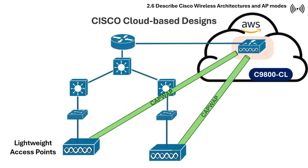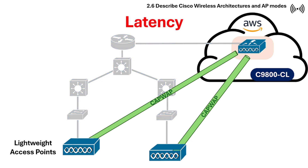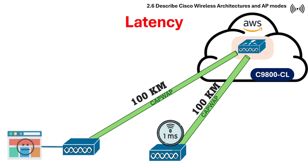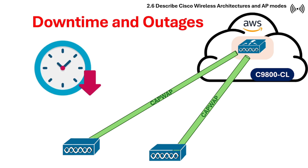This example shows a high-level view of a cloud-based WLC design in Amazon AWS. Cloud-based wireless architectures, while offering advantages, can also present disadvantages including latency, especially if deployed in a remote cloud environment far from the access points, potentially affecting roaming and real-time applications.